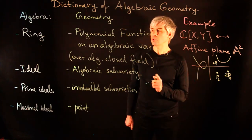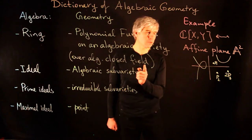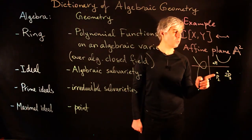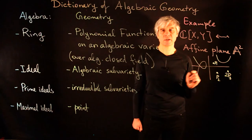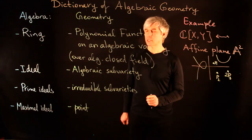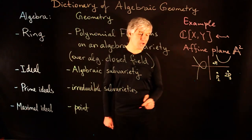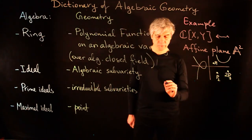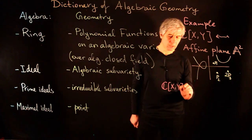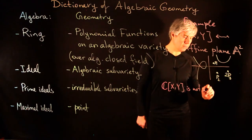The set of functions that vanish at a given point form a maximal ideal. Hilbert's Nullstellensatz claims that over an algebraically closed field, any maximal ideal corresponds to some point on the algebraic variety. One of the defining properties of Dedekind domains is that prime ideals must be maximal. From here we see that C[x,y] is not a Dedekind domain.